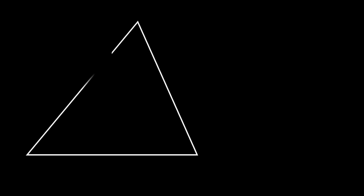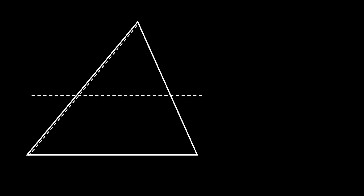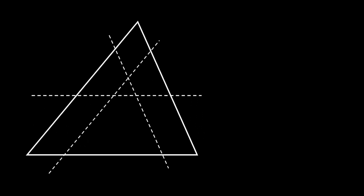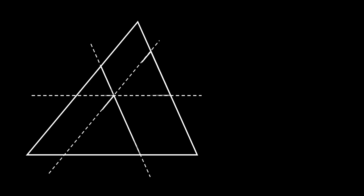Let's start with a random triangle, and then from its sides we will pull three parallel lines in such a way so that they intersect in a single point inside the triangle. As you can see, we have now formed three new inscribed triangles.